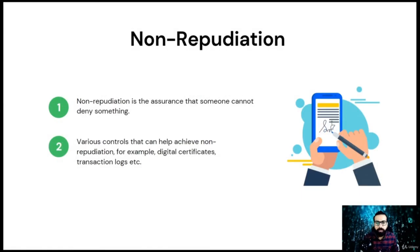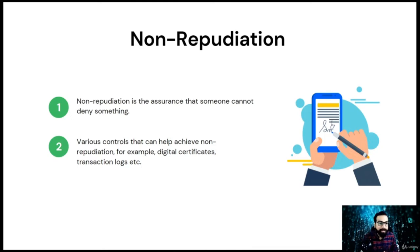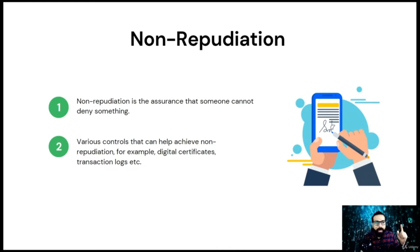Non-repudiation is a very interesting concept. It is an assurance that the subject of an activity or event cannot later deny that the event occurred. For example, I might change a password and then deny having done so. Non-repudiation prevents a subject from claiming not to have sent a message, not to have performed an action, or not to have been the cause of an event. For instance, the security system at a building maintains visit logs with visitors' signatures so they cannot deny their visit on a particular date and time.